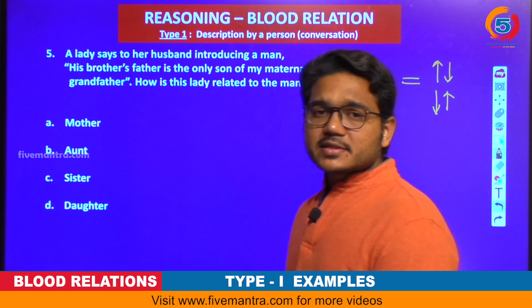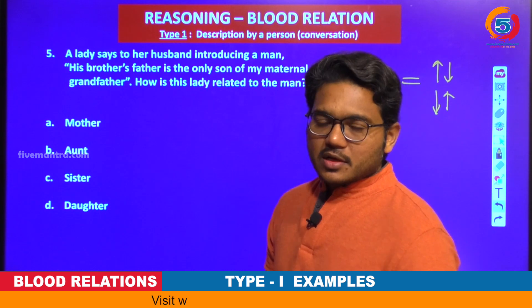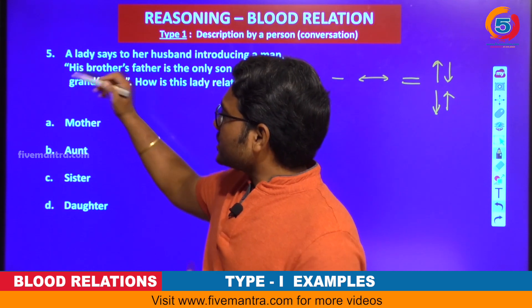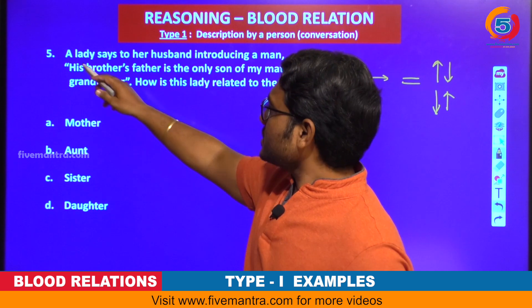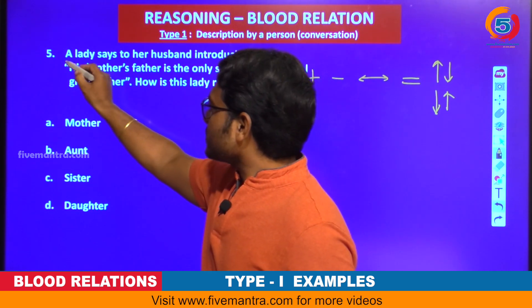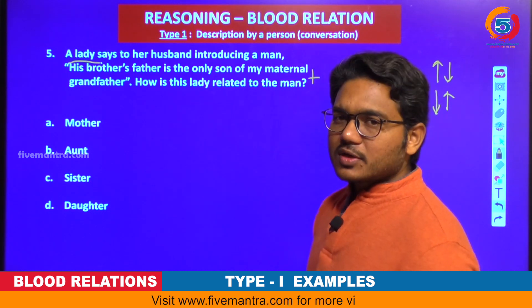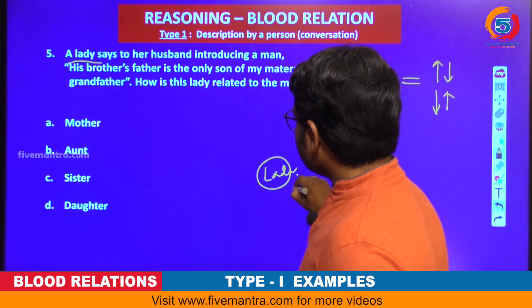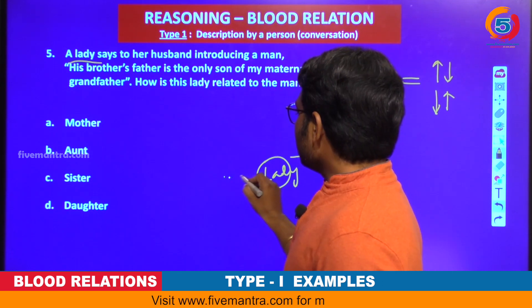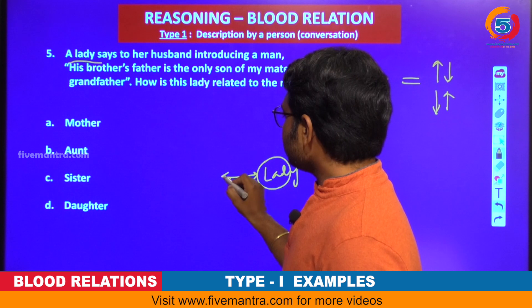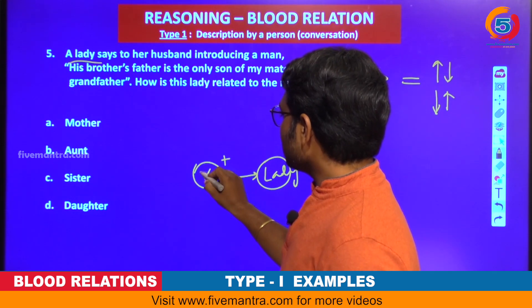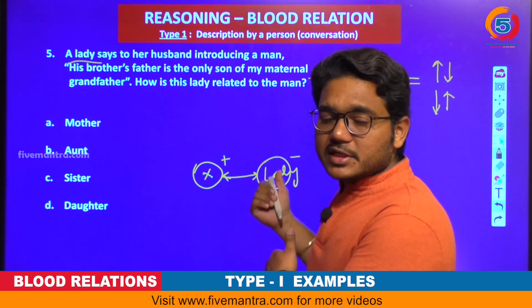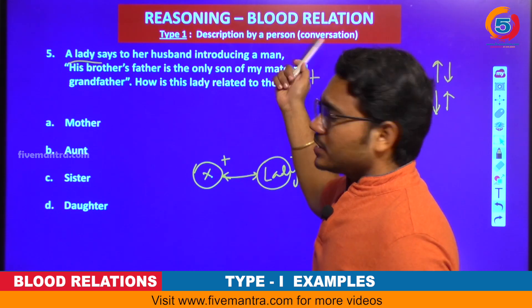Coming to our next question, let us read the statement and choose the appropriate option. The first thing you need to do is identify the speaker. The problem goes like this: a lady says — so obviously the speaker is a lady, and she is speaking to her husband. So initially two persons are identified here. The lady is speaking, and she is speaking to her husband, whom we put as X. She is introducing a man.